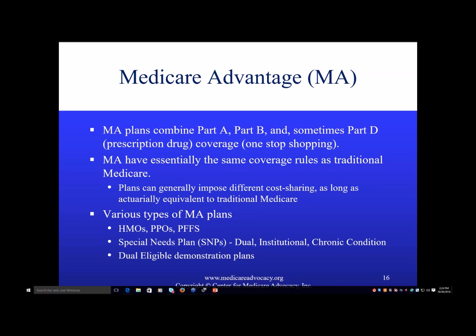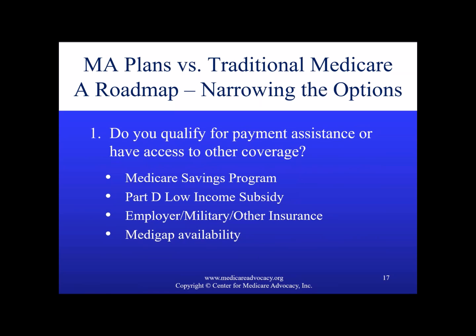Starting with this roadmap: the first threshold question, really for any Medicare beneficiary, before one should even start trying to decide whether or not they want to be in a Medicare Advantage plan is: what kind of coverage do you already have, if any, and are you eligible for any assistance with premiums or cost sharing? Sometimes your choice might already be made for you. If folks qualify for Medicare savings programs, that can go a long way towards covering some of their premium and out-of-pocket costs. Qualified Medicare beneficiaries — QMBs — have general protections against being balance billed, and that is supposed to also apply in Medicare Advantage plans. The Part D low income subsidy is a great help to folks who qualify for it.